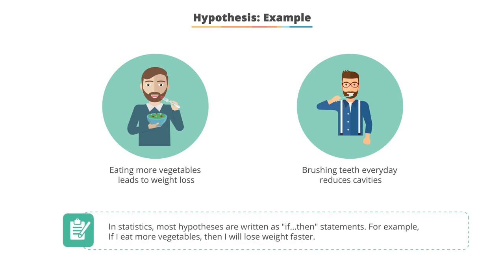In statistics, most hypotheses are written as if-then statements. So if I eat more vegetables, then I will lose weight faster. If we go back and say eating more vegetables leads to weight loss, the independent variable is eating more vegetables. And if that holds true, if it's a linear relationship, then the more vegetables that I eat — the independent variable — will cause me to lose weight. And that's the effect: the weight loss. So the amount of weight I lose is affected by the amount of vegetables that I eat.